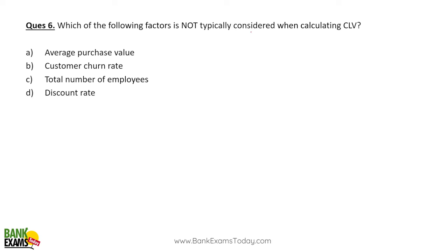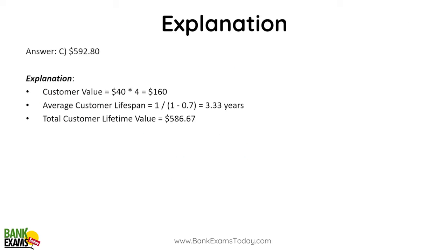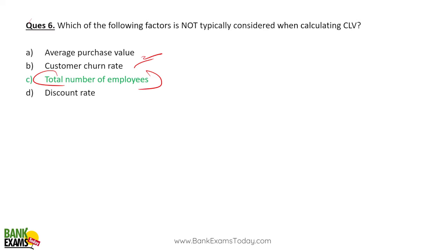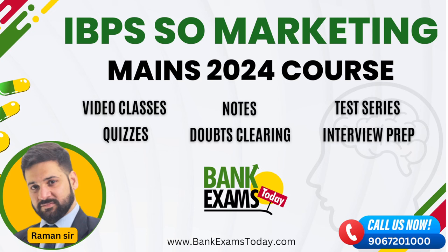Which of the following is not typically considered while calculating the customer lifetime value? Purchase value, churn rate, discount rate — to use hoti hai. Total number of employees is not generally used while calculating the customer lifetime value. Discount rate bhi kahi bar use ho jata hai. In the future, we are going to do one question where discount rate is also given.